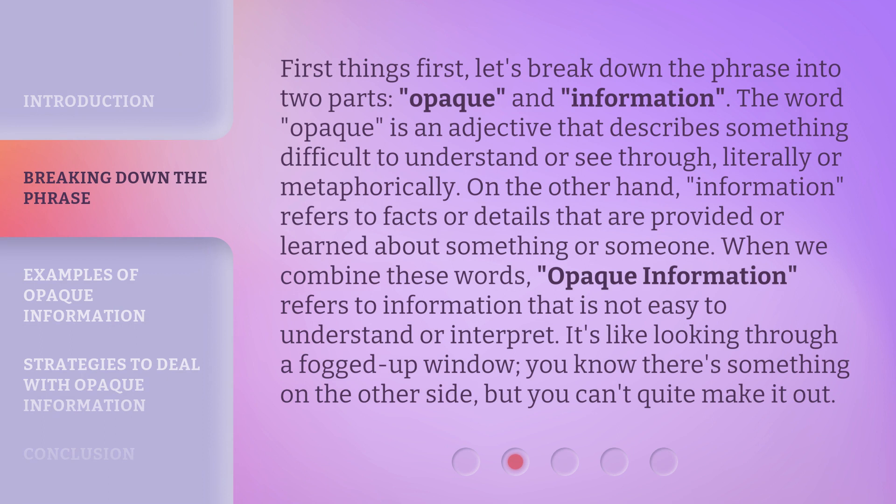First things first, let's break down the phrase into two parts: Opaque and Information. The word Opaque is an adjective that describes something difficult to understand or see through, literally or metaphorically. On the other hand, information refers to facts or details that are provided or learned about something or someone. When we combine these words, Opaque Information refers to information that is not easy to understand or interpret. It's like looking through a fogged-up window — you know there's something on the other side, but you can't quite make it out.